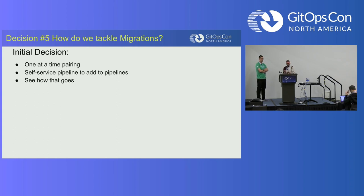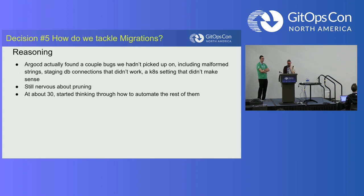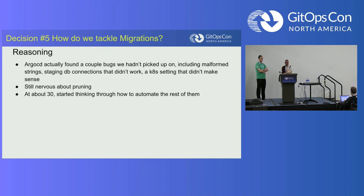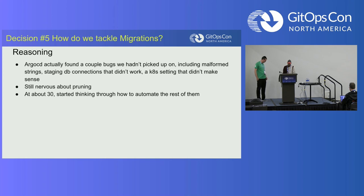After we got better at that, we formalized the process into a self-service pipeline — basically a button that teams could click to migrate their services to GitOps. We saw a couple of bugs we hadn't anticipated when migrating the first services, including the malformed string issue Alicia mentioned, staging database connections that didn't work, and some Kubernetes settings that weren't actually doing anything. At around 30 services, we started thinking about how to automate the rest of the migration — we had 100 services to tackle.